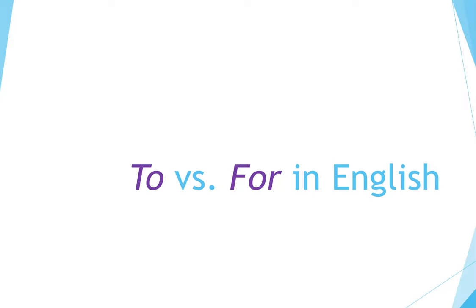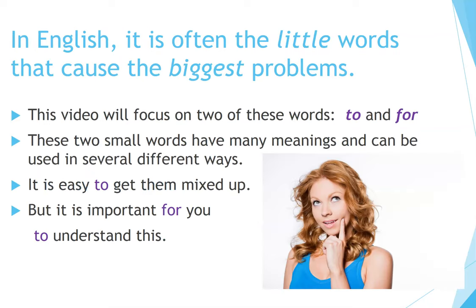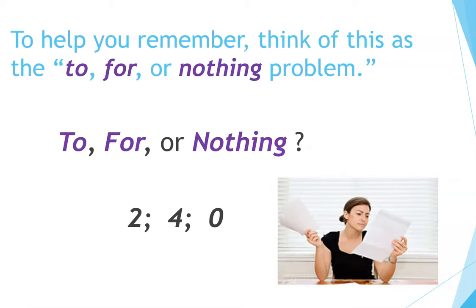Two versus four in English. In English, it is often the little words that cause the biggest problems. This video will focus on two of these words: 'to' and 'for.' These two small words have many meanings and can be used in several different ways. It is easy to get them mixed up, but it is important for you to understand this. To help you remember, think of this as the 'to, for, or nothing' problem.